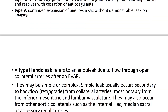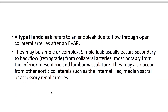Type 5 is continued expansion of the aneurysm sac without a demonstrable leak on imaging. A Type 2 endoleak refers to flow through open collateral arteries. They may be simple or complex. Simple leaks usually occur secondary to backflow from collateral arteries, most notably from the inferior mesenteric and lumbar vasculature. They may also occur from other aortic collaterals such as internal iliac, median sacral, or accessory renal arteries.